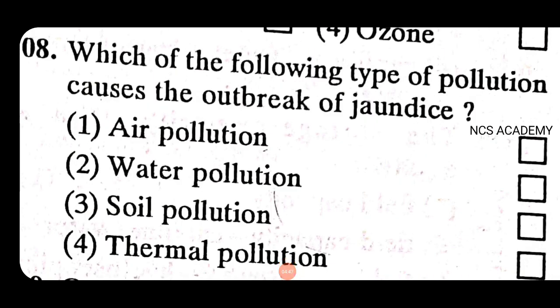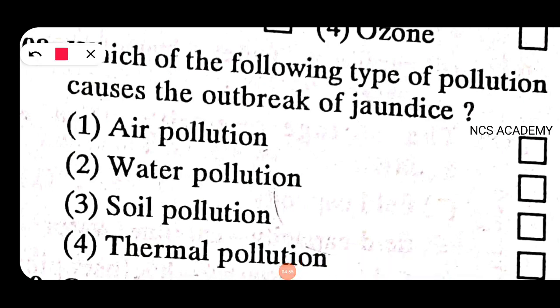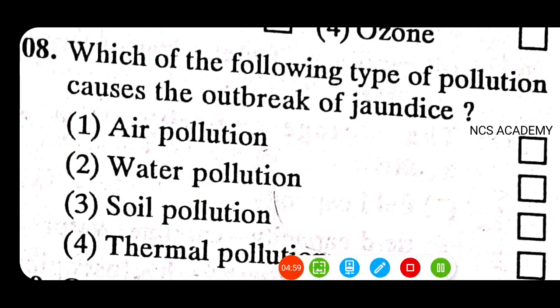Which type of pollution causes the outbreak of jaundice? The main reason is water pollution, so the right answer is water pollution. Jaundice is caused by water pollution.